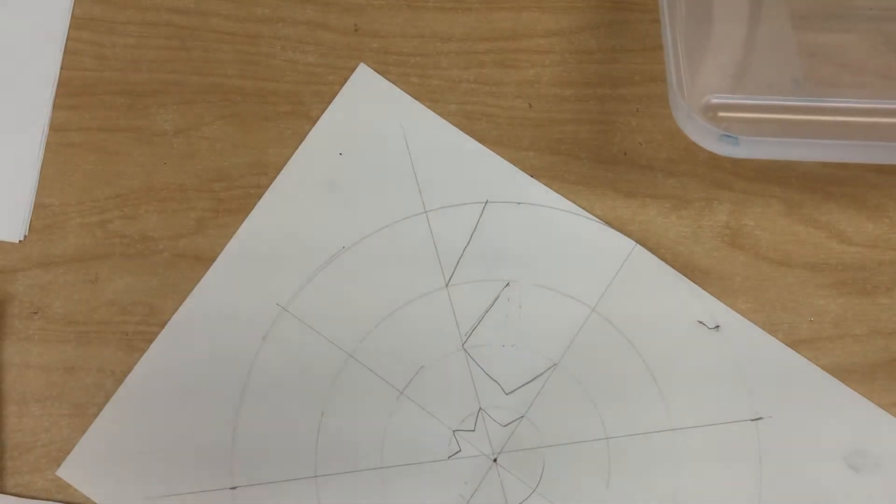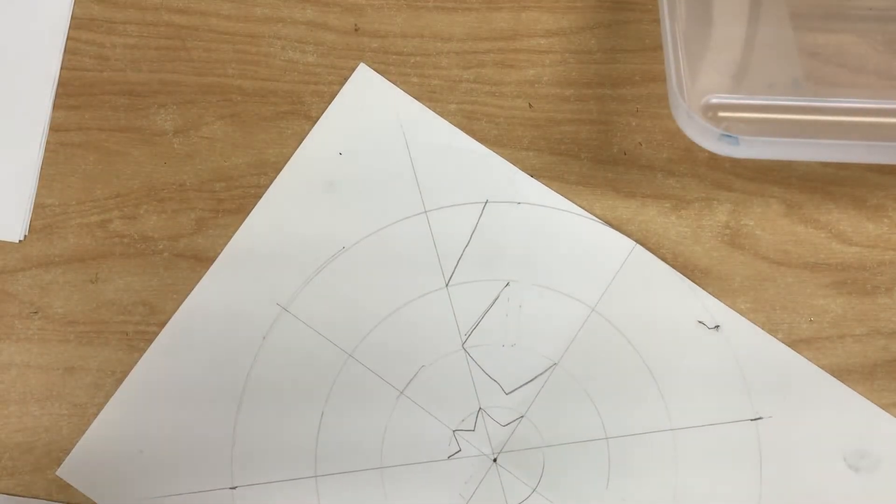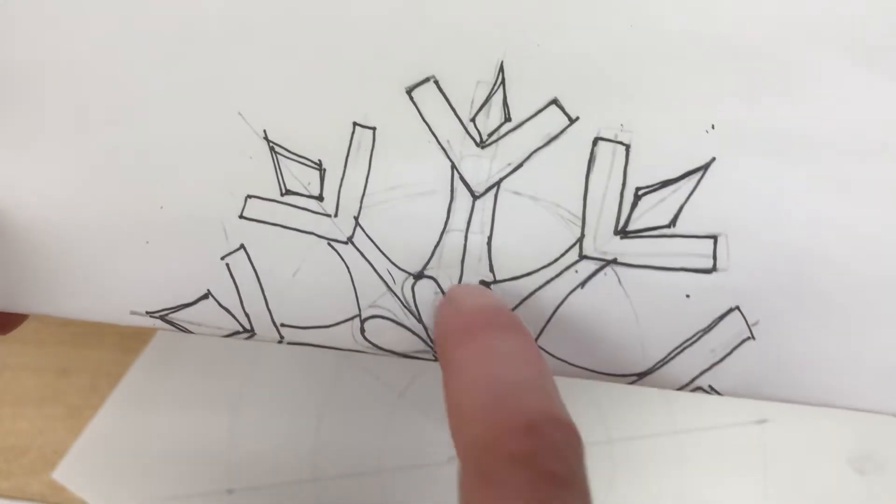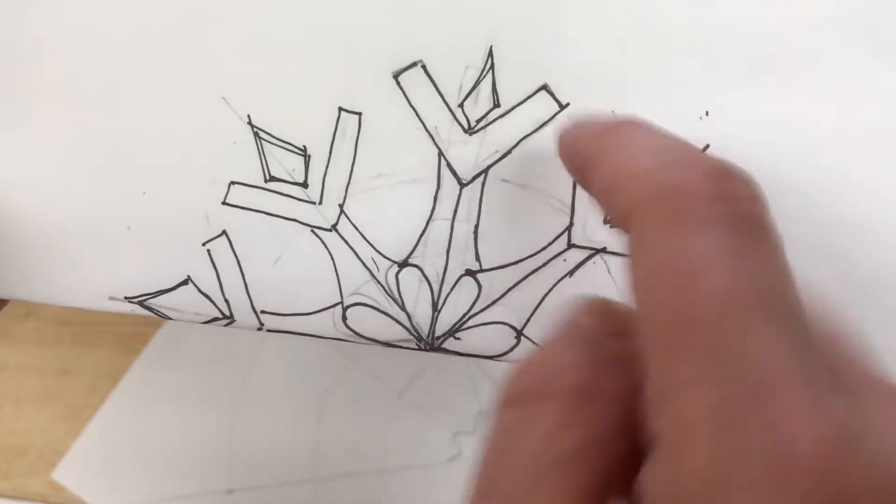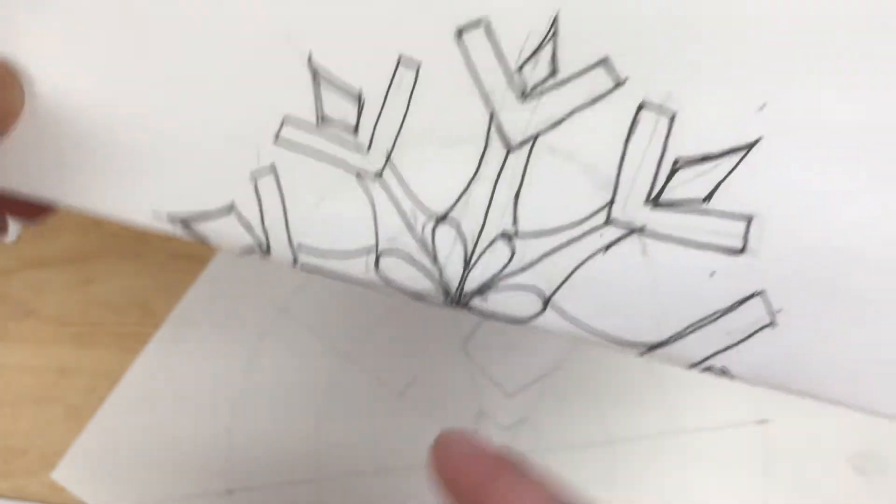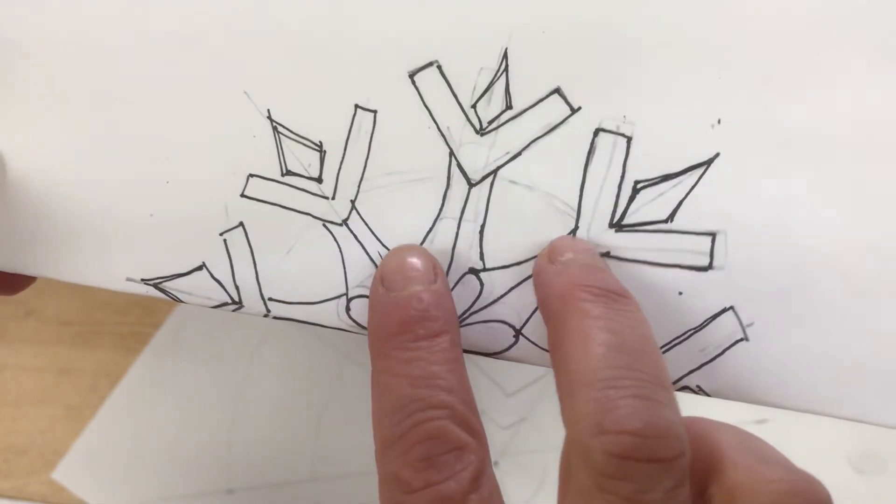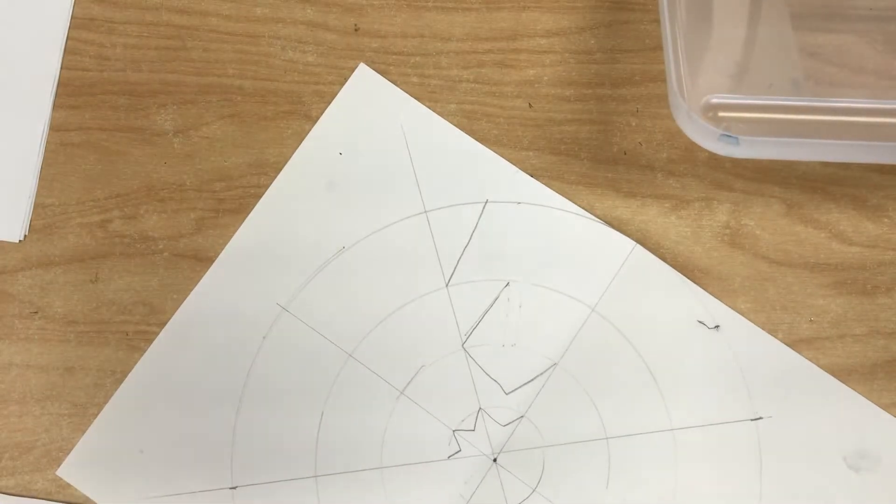For anything you make, like for example this one I made a line, but then I drew lines around it so each part of the design is actually a shape.